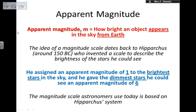He assigned an apparent magnitude of one to the very brightest stars in the sky. Then stars not as bright got a two, then a three, and so on. The very dimmest stars — right at the threshold of what he could see with the naked eye — he gave an apparent magnitude of six. Those were the dimmest stars.